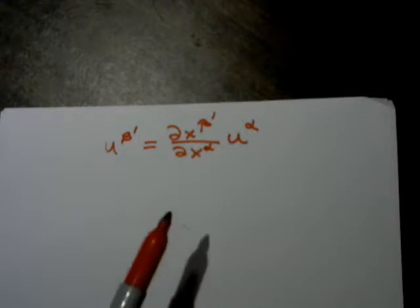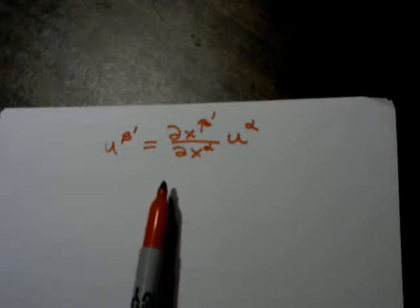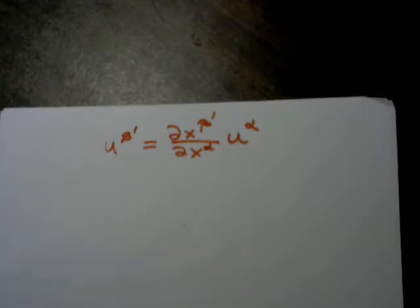But mathematicians define a vector as a set of components that transforms according to a certain rule. Right here, this is the definition of a vector, but they throw away the base vectors. They just say anything whose components transform that way is a vector.